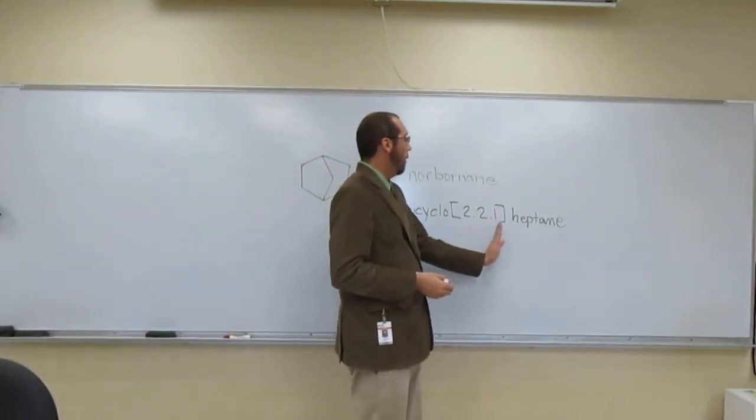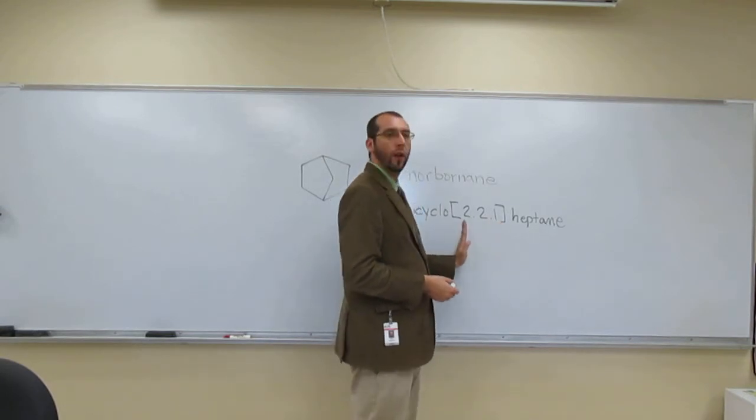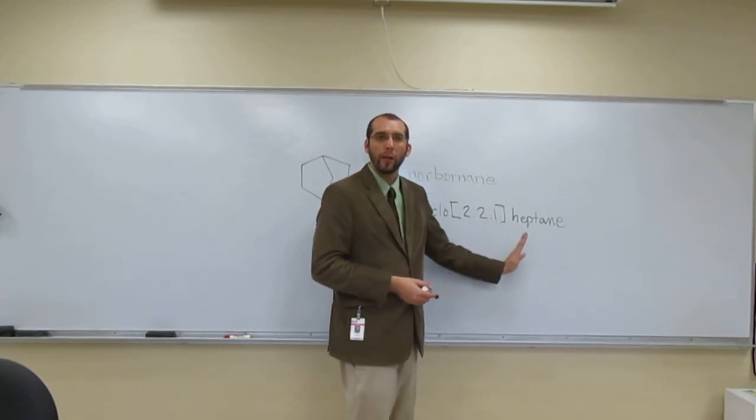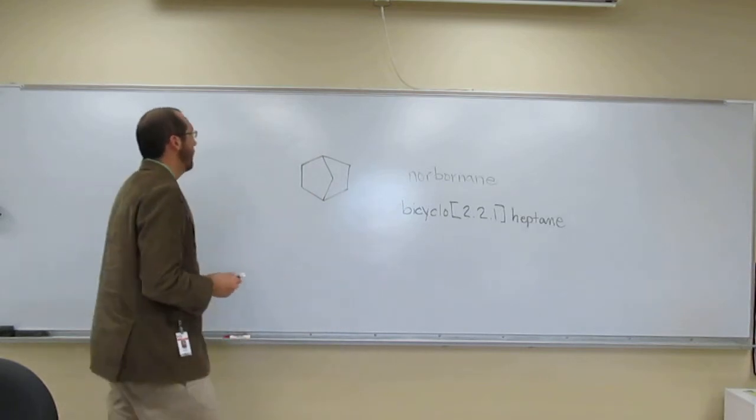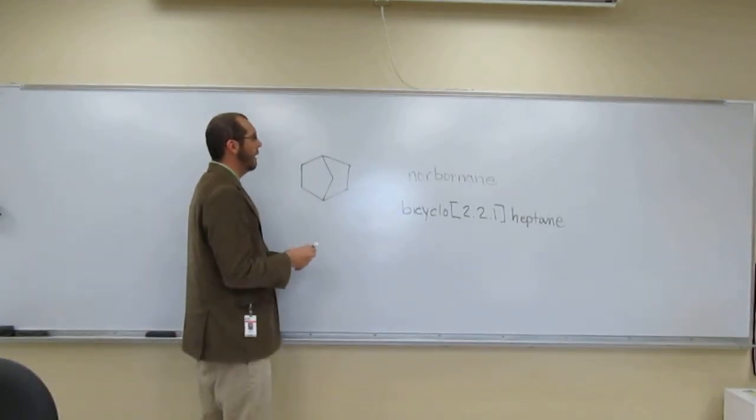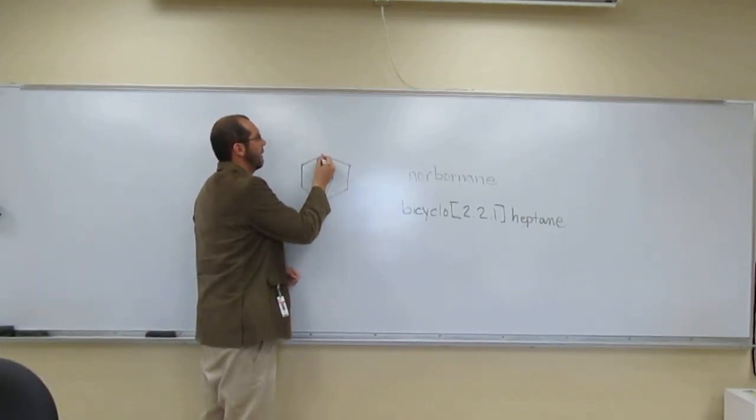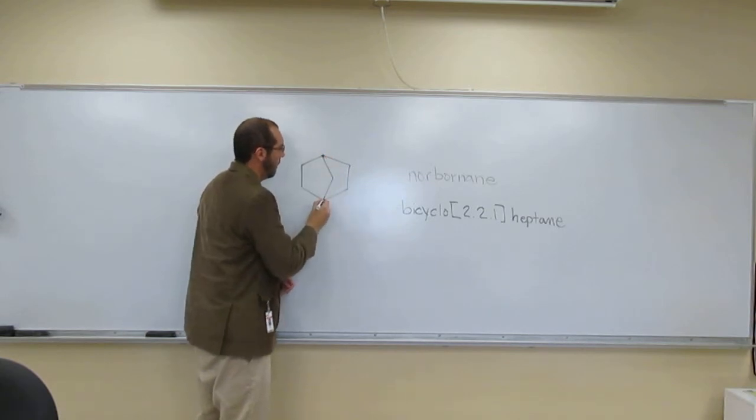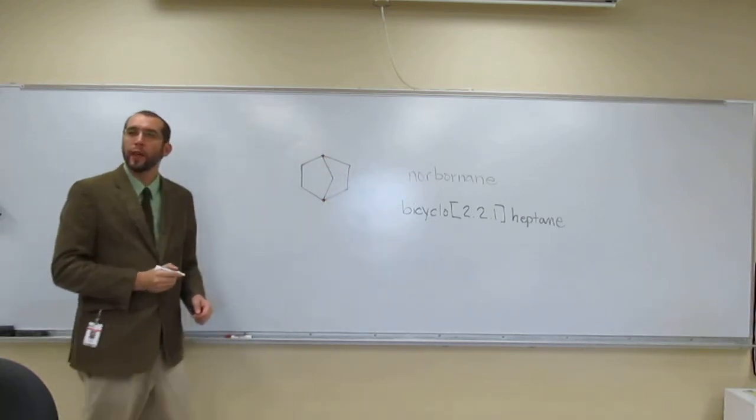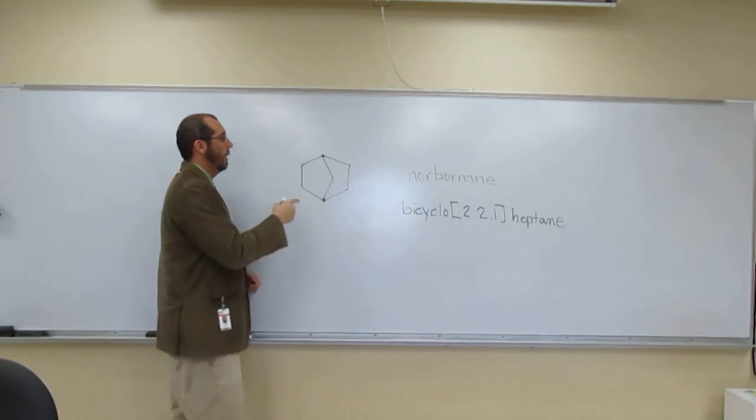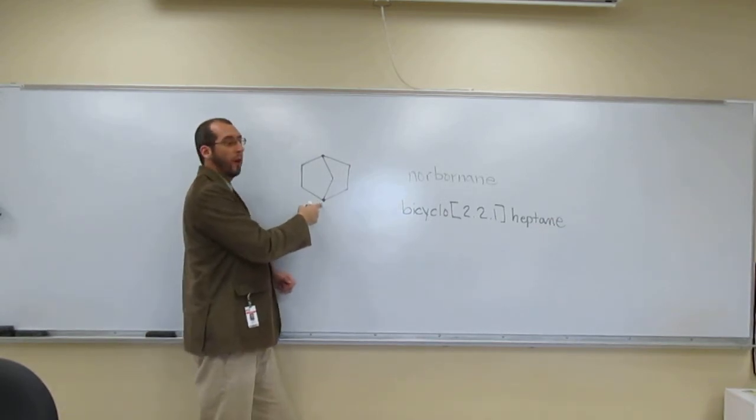The 2, 2, 1, right, so we have to go from big to small with the numbers. And where do those numbers come from? Well, when we look at the rings here, right, so those are what we call the bridgehead carbons there. When we look at the bridgehead carbons from there...